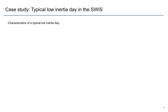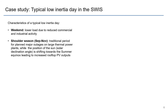So what makes for a typical low inertia day in the SWIS? Low inertia is strongly correlated with low loads. Low loads occur on weekends, when there is reduced commercial and industrial activity, and during shoulder periods — for us, September to November, the spring shoulder. That's traditionally the period for planned major outages on large thermal plants. At the same time, the solar declination angle is shifting toward the summer equinox, so we see increased rooftop PV output. With major outages reducing inertia and high PV output eating into operational demand, conditions align for very low inertia.